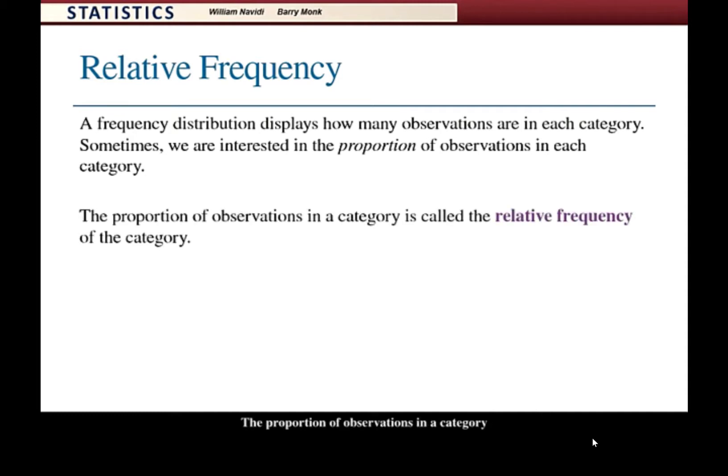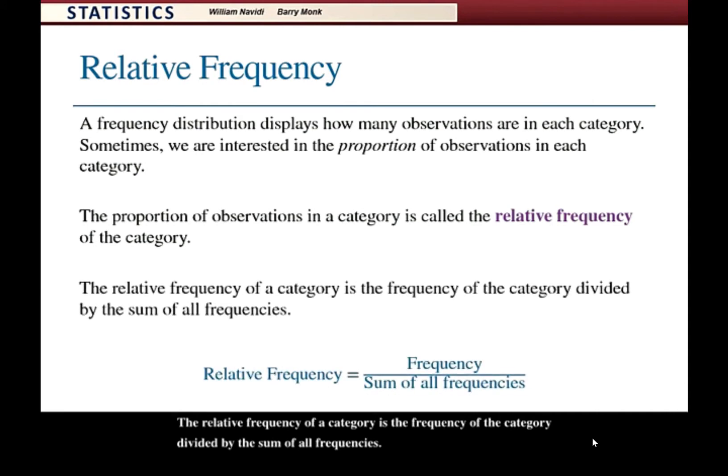The proportion of observations in a category is called the relative frequency. The relative frequency is calculated by dividing the frequency of the category by the sum of all frequencies.